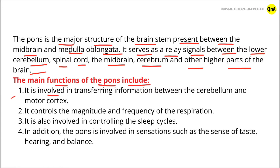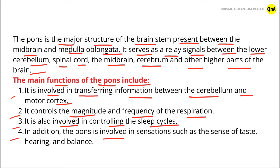The main functions of the pons include: it is involved in transferring information between the cerebellum and motor cortex. It controls the magnitude and frequency of respiration. It is also involved in controlling the sleep cycles. In addition, the pons is involved in sensations such as the sense of taste, hearing, and balance.